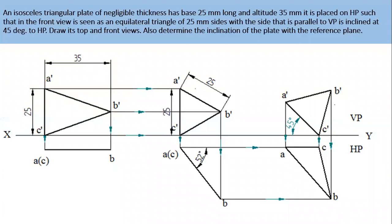The problem is like this. An isosceles triangular plate of negligible thickness has base 25 mm long and altitude 35 mm. It is placed on HP such that in the front view it is seen as an equilateral triangle of 25 mm sides with the side that is parallel to VP is inclined at 45 degrees to HP. Draw its top and front views. Also determine the inclination of the plate with the reference plane.